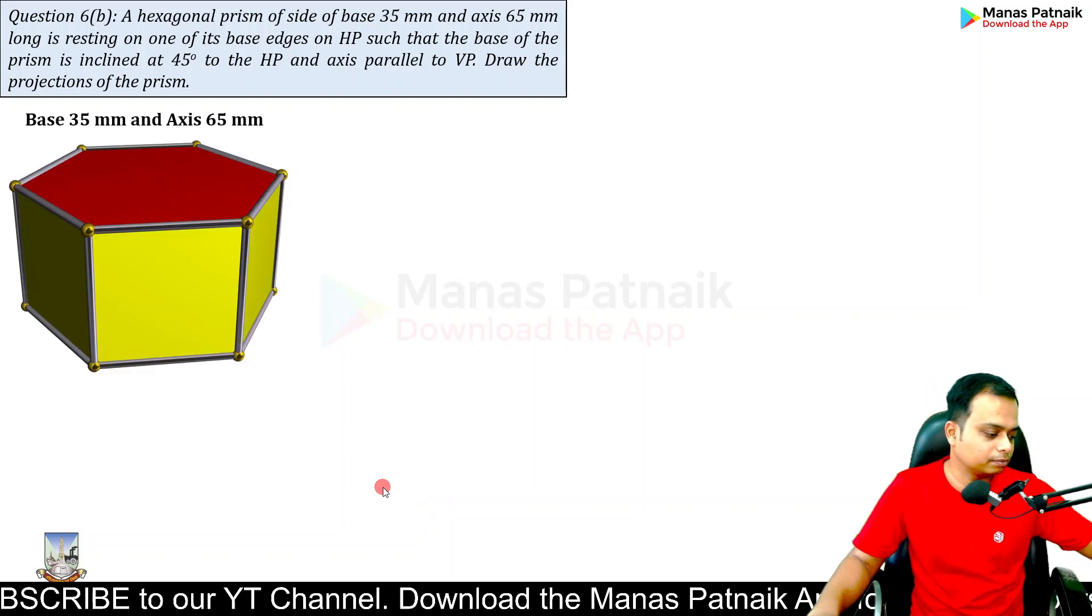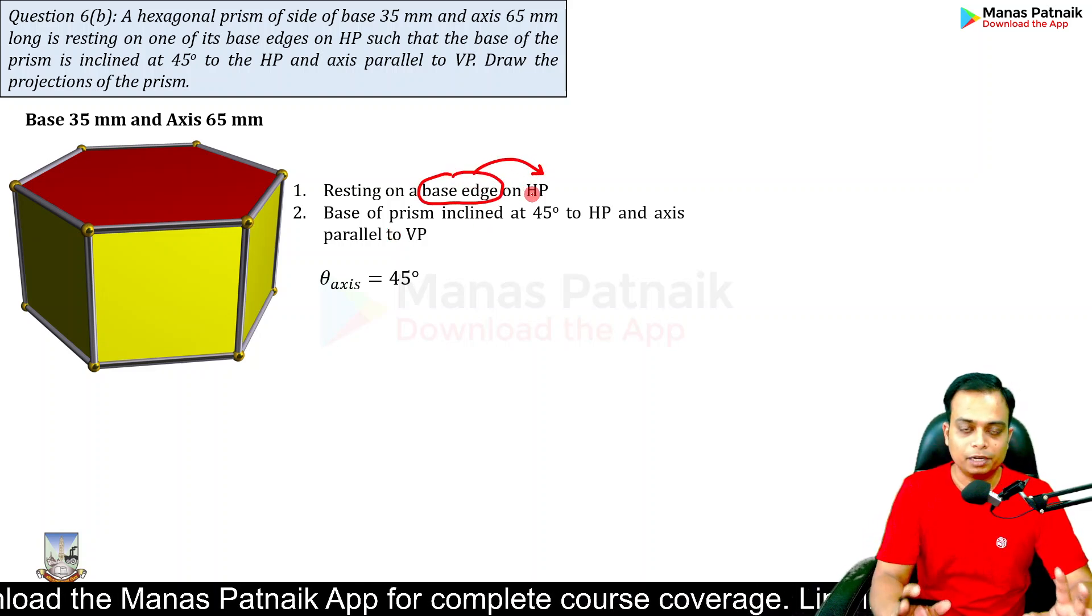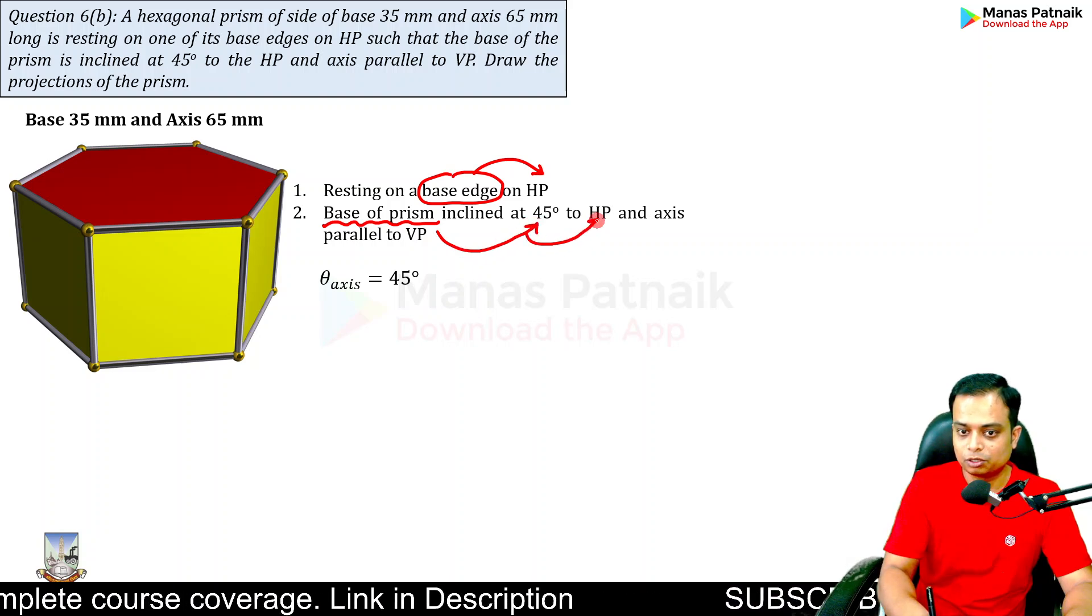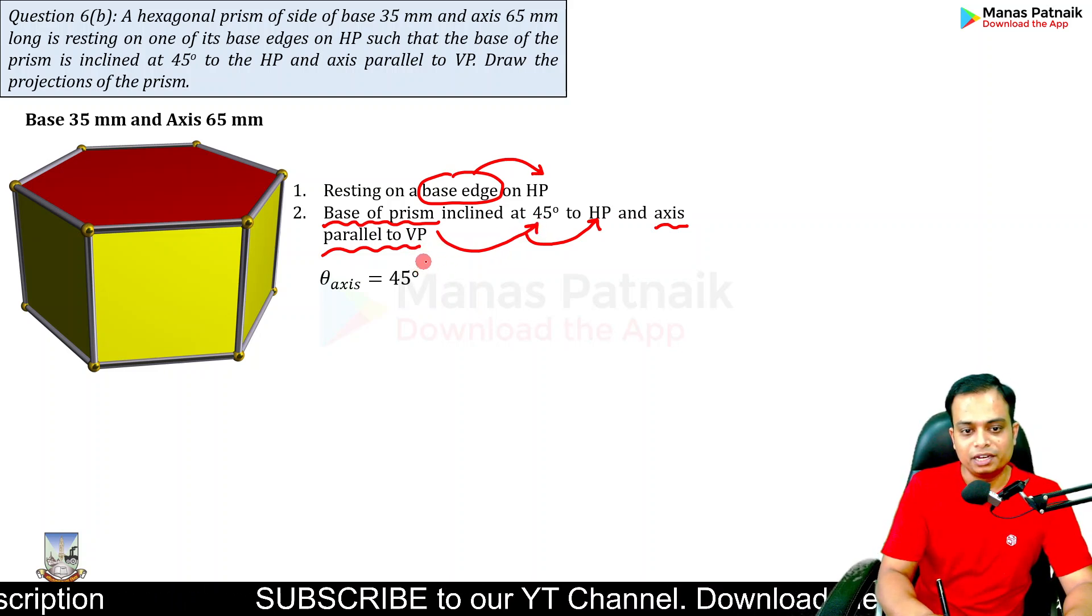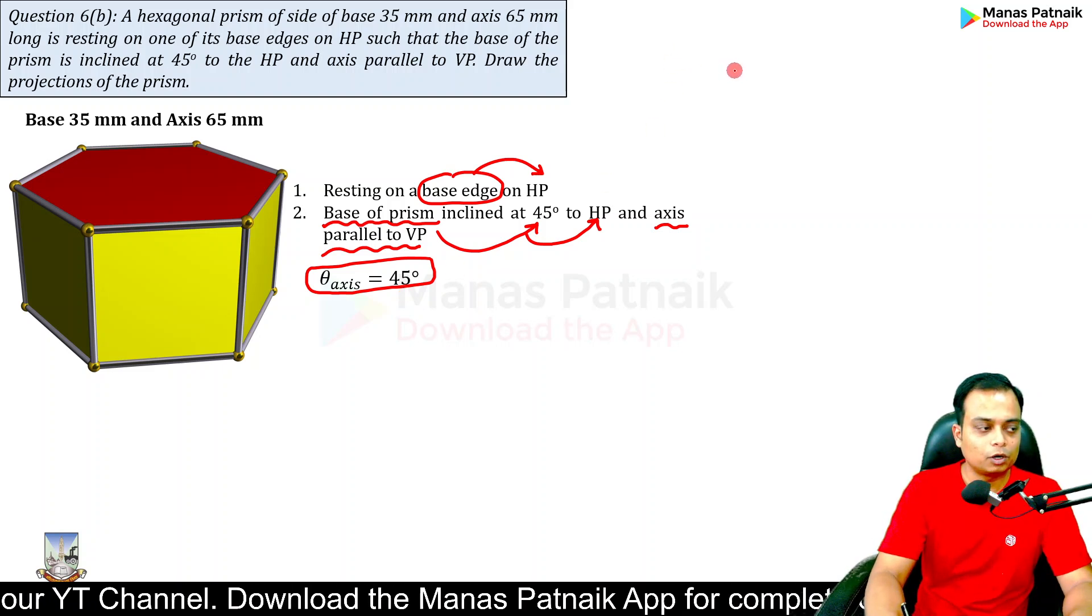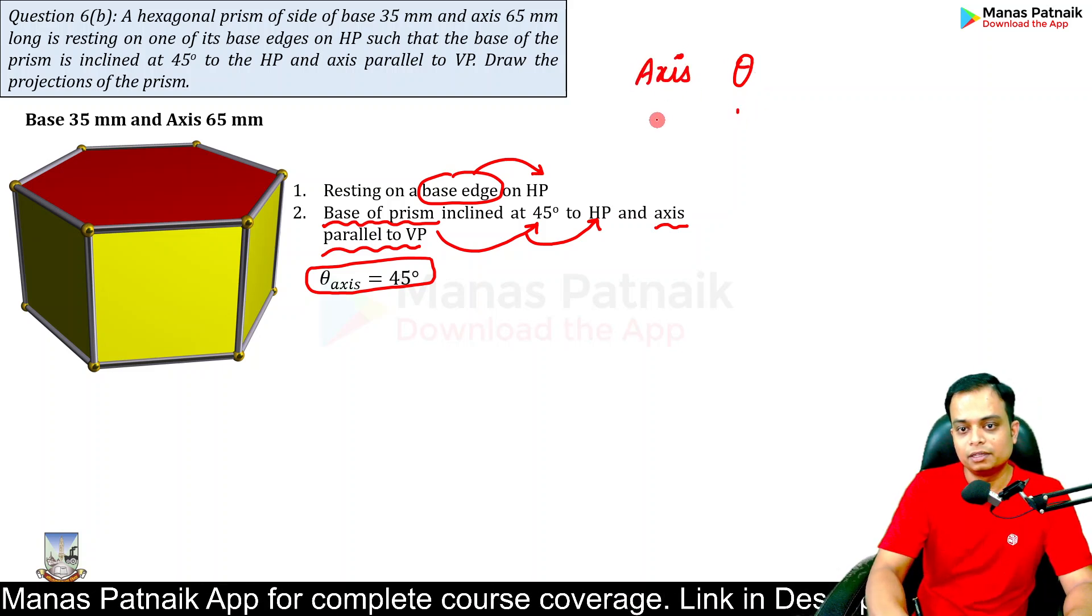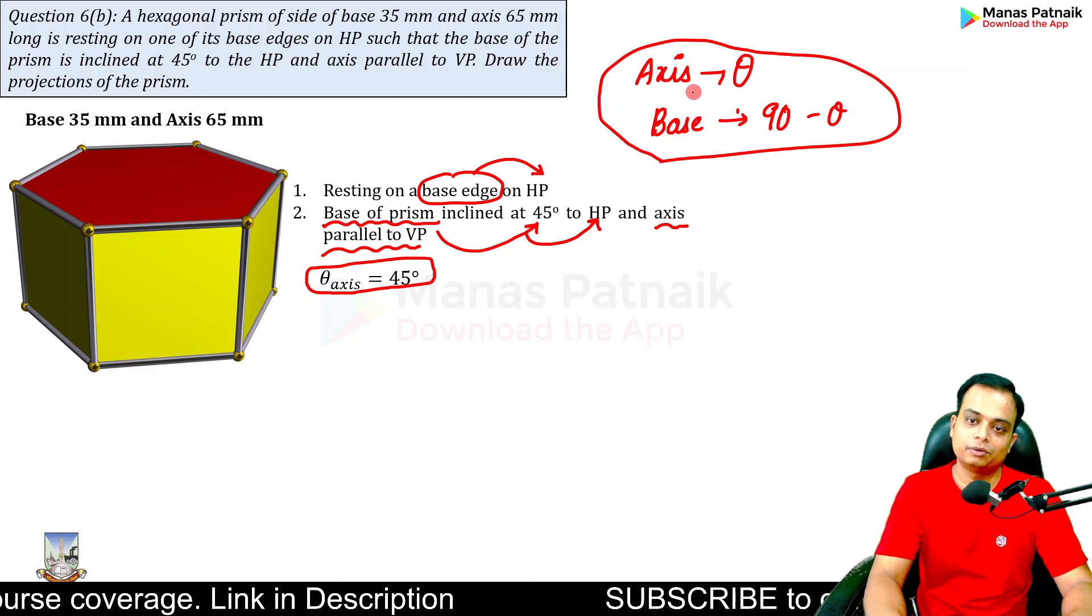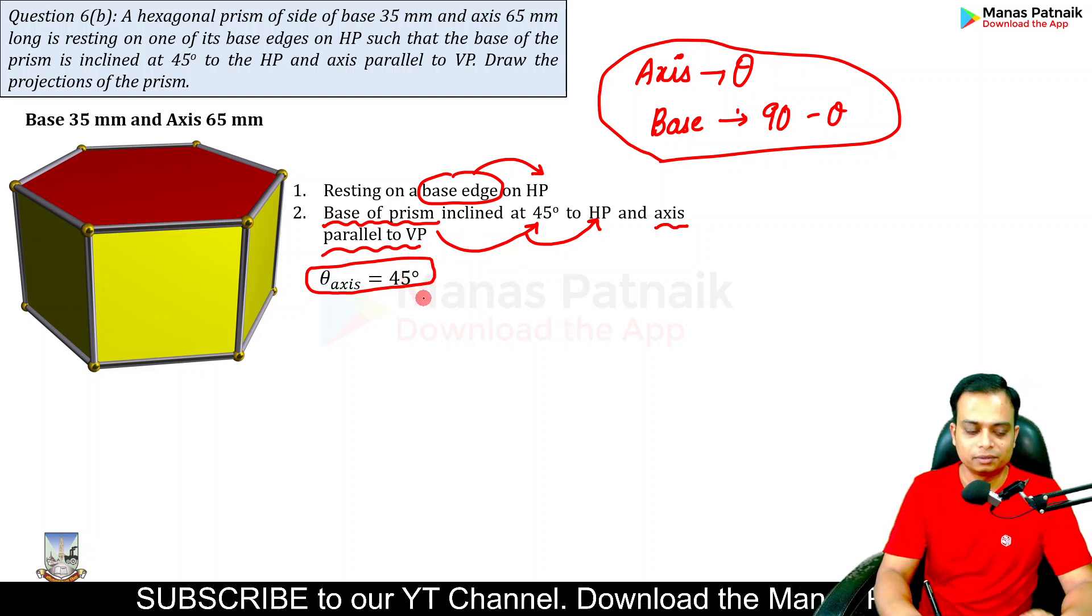We are talking about a hexagonal prism. This prism has its base edge on the HP. The base of the prism is at an angle of 45 degrees with respect to the horizontal plane, and the axis being parallel to the vertical plane. Fair enough. If the base is inclined at an angle of 45 degrees, then automatically you can make this conclusion that the axis is also at an angle of 45 degrees. I have taught you in my earlier classes that if axis inclination is theta, then the base inclination is going to be 90 minus theta. Here it's the other way around. You have been given the base inclination; therefore, the axis inclination is going to be 90 minus theta, vice versa.